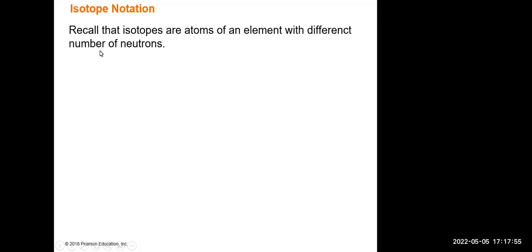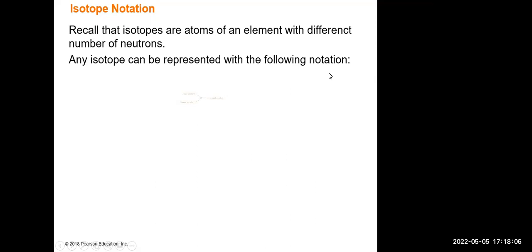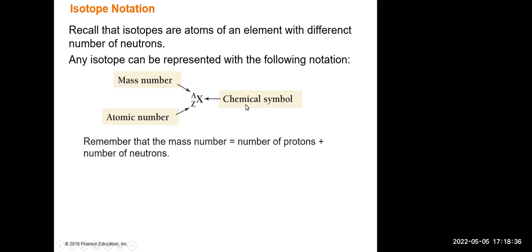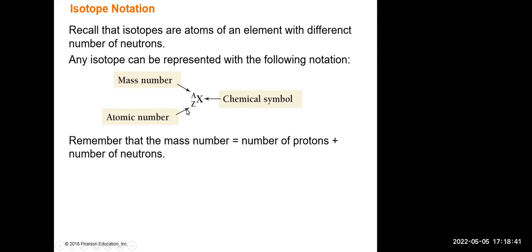Isotopes are atoms of an element with a different number of neutrons. Any isotope can be represented with the notation: X is the chemical element symbol, A is the mass number (an integer), and Z is the atomic number — the number that identifies the chemical element. Z is also the number of protons and is called the atomic number. You can get this information from the periodic table.